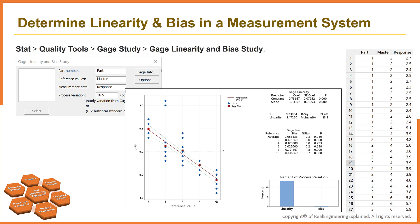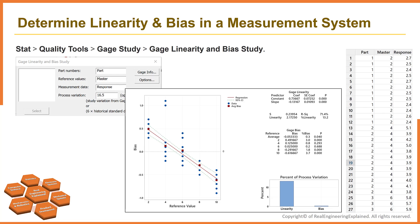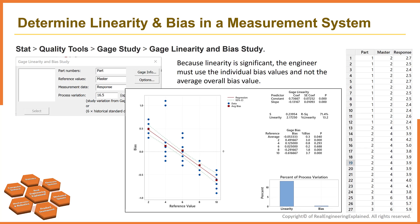The percent of linearity is 13.2%, which indicates that the gauge linearity explains 13% of the overall process variation. The p-value for the slope is 0, which indicates that the slope is significant and that linearity is present in the measurement system. Because the linearity is significant, the engineer must use the individual bias values and not the average overall bias value. The individual bias values vary from 0.2 to 3.7, and their p-values vary from 0 to 0.688. Reference values of 2 mm, 8 mm, and 10 mm have bias, but values of 4 and 6 mm do not.